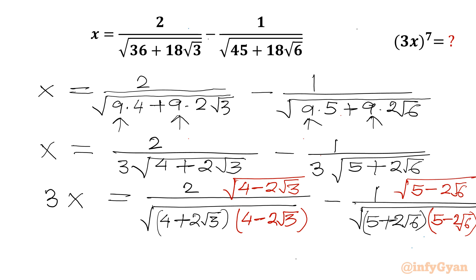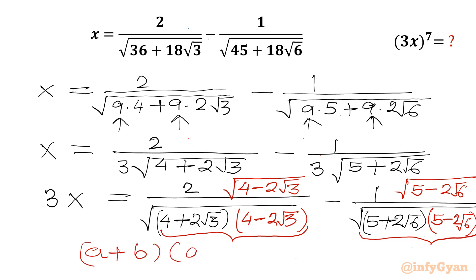In the denominator it is (a + b)(a − b), which by the identity equals a² − b². So in the denominator we can write 4² − (2√3)² for the first term.